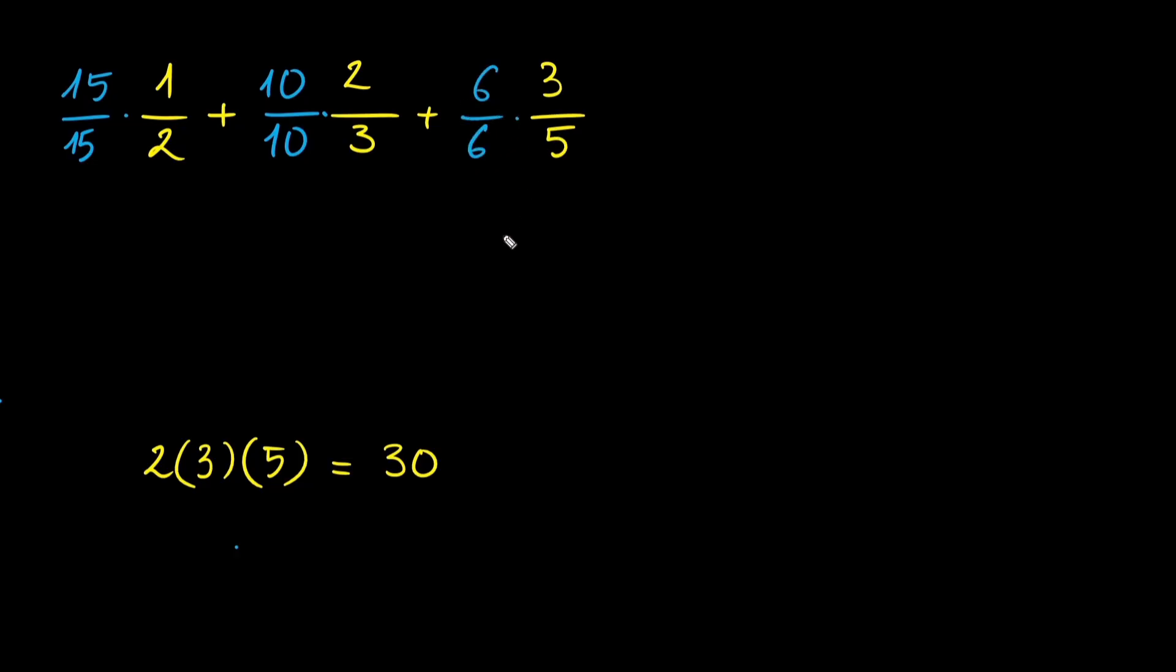Now let's do the math. 15 times 1 is 15, 2 times 15 is 30. 2 times 10 is 20, 3 times 10 is 30. 3 times 6 is 18, 5 times 6 is 30.